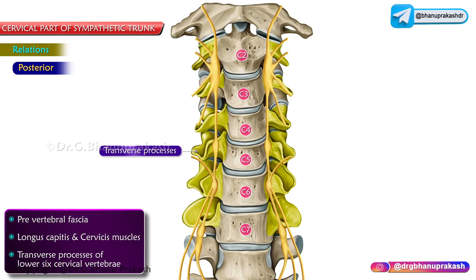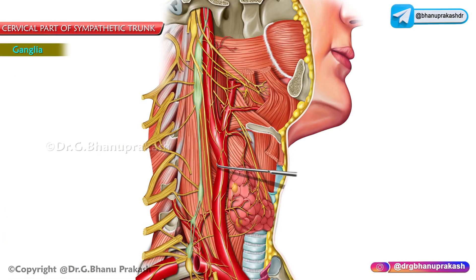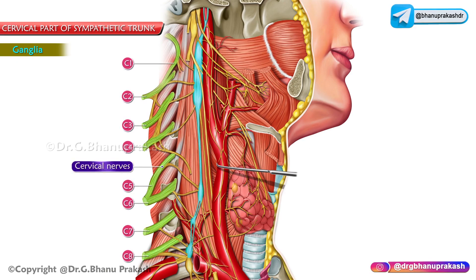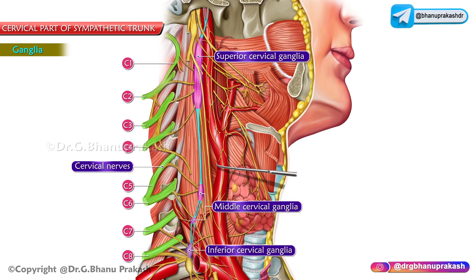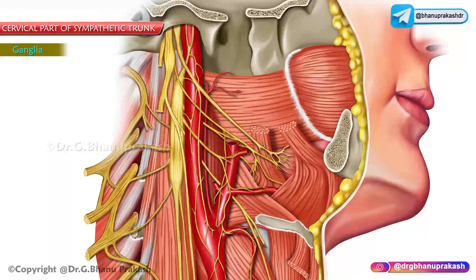Theoretically there should be eight sympathetic ganglia corresponding to the eight cervical nerves, but due to fusion there are only three cervical ganglia: the superior, middle, and inferior cervical ganglia.